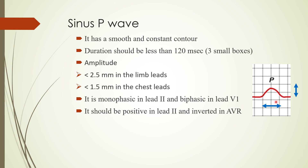A sinus P wave has a smooth and constant contour — a smooth onset and a smooth offset — and this pattern must remain constant and not be changing. The duration should be less than 120 milliseconds. Since one small box is 40 milliseconds, the P wave duration as marked by the arrow should be less than three small boxes, which equals 120 milliseconds.